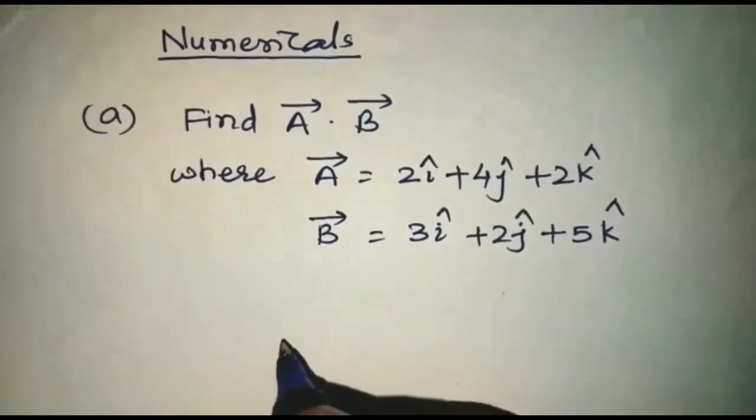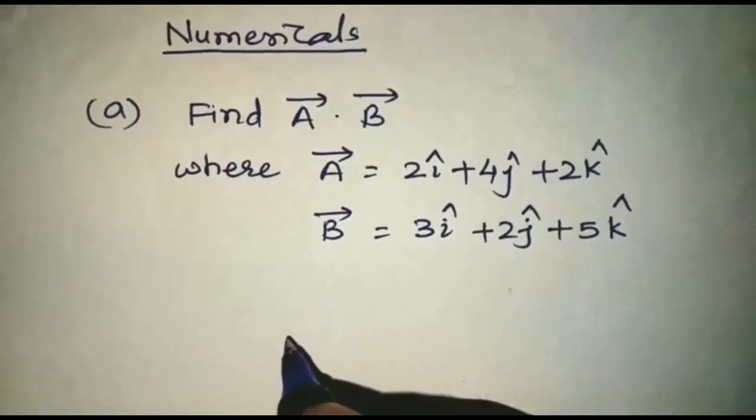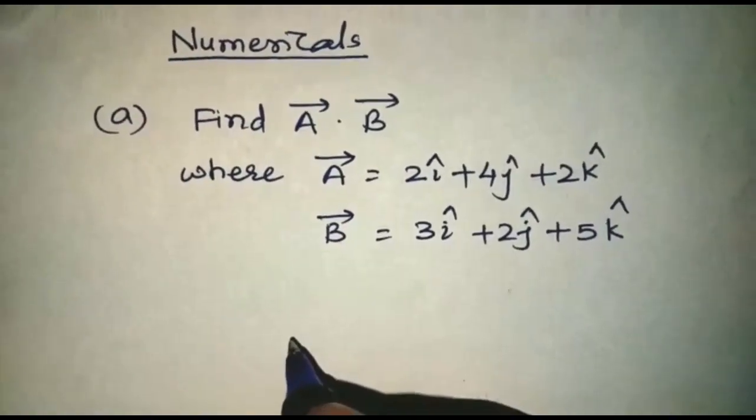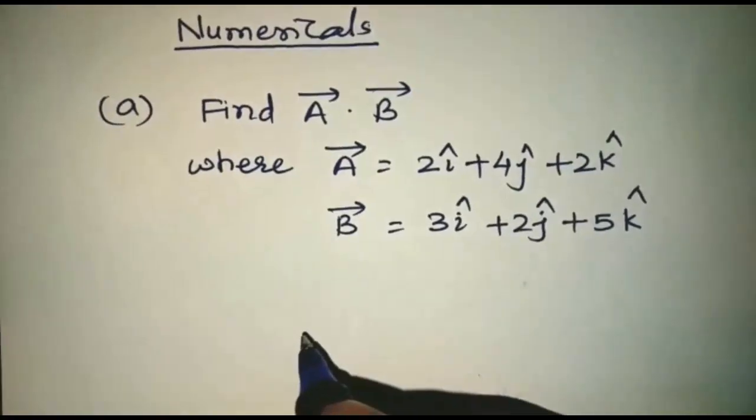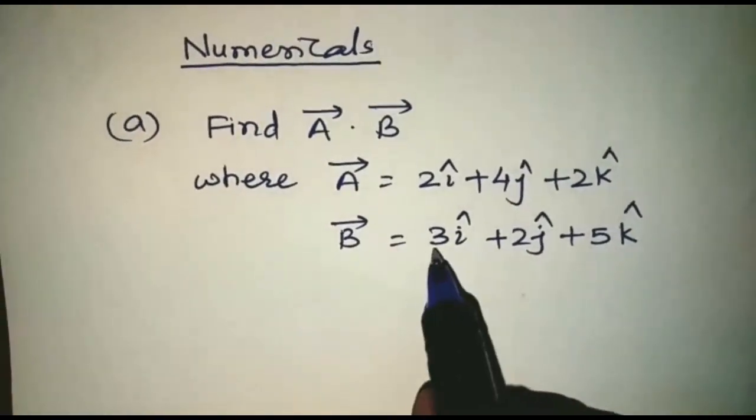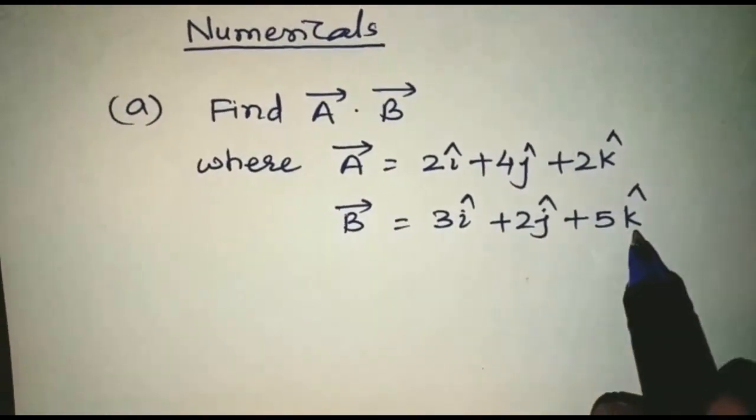I am going to solve some numericals related to dot product and cross product. First question is: find A dot B where vector A equals 2i plus 4j plus 2k and vector B equals 3i plus 2j plus 5k.